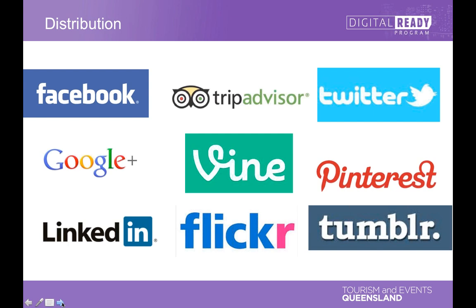In marketing we have the distribution side of things — in this case, where the video is going to go. You can see here the typical places you might like to share video, depending on your target markets and demographics. Different videos belong in different places. One you may or may not have heard of is called Vine — the green one in the middle — developed by Twitter. It's only been around for a few months and it's a six-second loop, so if you find something really quirky that would look good on a six-second loop, it may well belong on Vine.